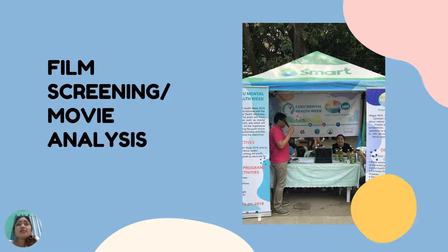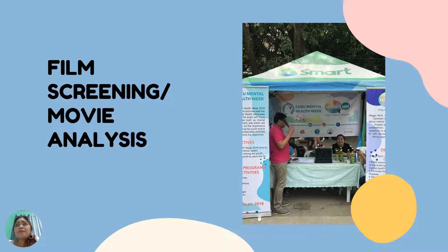You can also have a film screening or movie analysis. There are actually many movies about mental health illnesses. Depending on the movie, we also have to consider the age of our learners. You can research online for different films. One very common movie suitable for younger students is 'Inside Out,' which is about emotions. There is also 'What's Eating Gilbert Grape' with Leonardo DiCaprio. It really depends on the age of the students you're giving the movie analysis or film screening to.